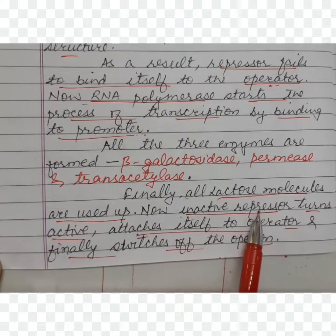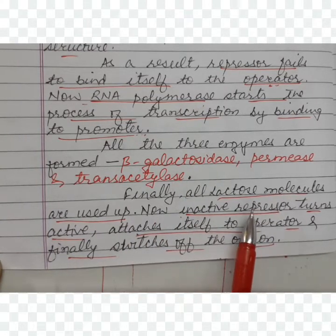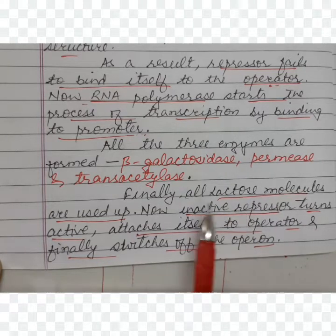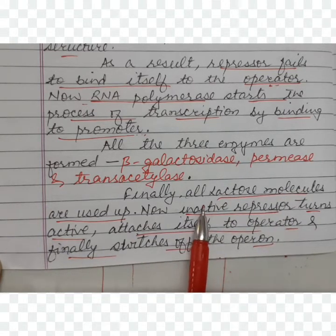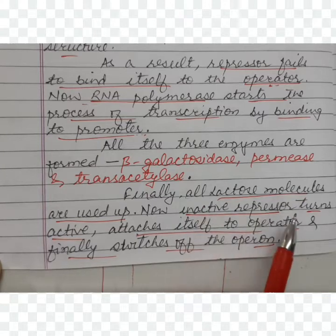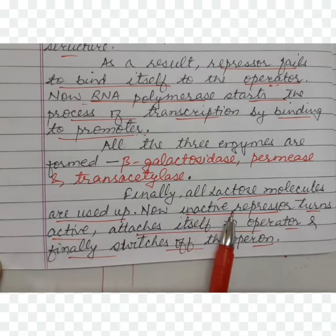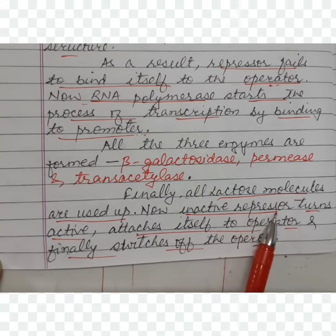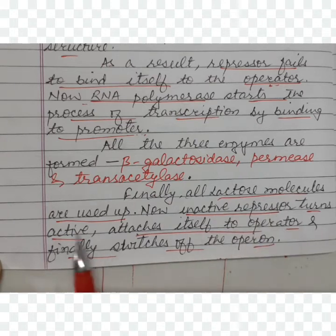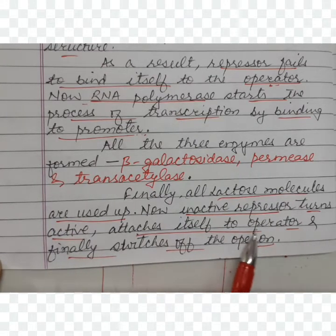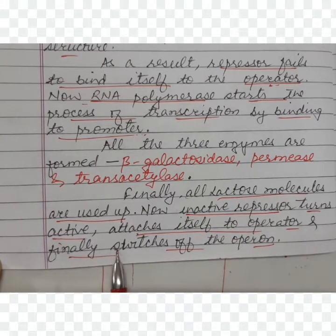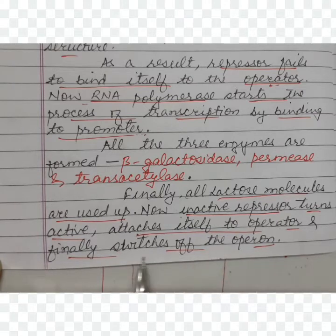Once lactose is consumed, the repressor — which was inactive while lactose was bound — becomes active again. It attaches itself to the operator, and finally the operon is switched off.